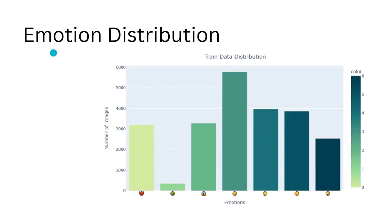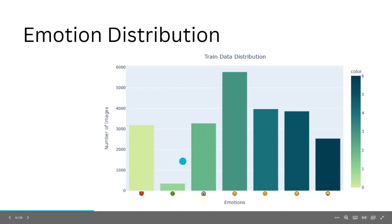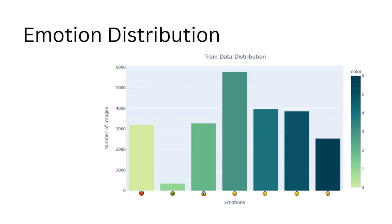As you can see, the emotional distribution is various. Here we have seven emotions, but as you can see, the least emotion is for disgusting. So we decided to remove it.